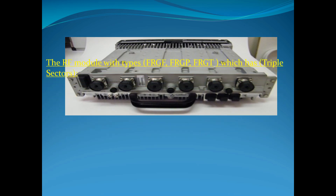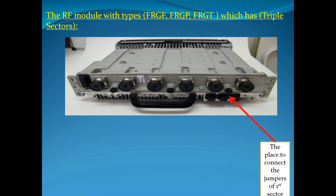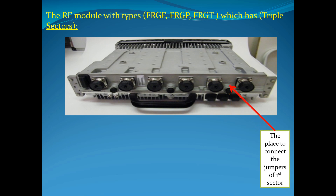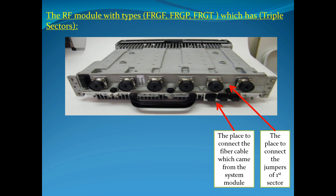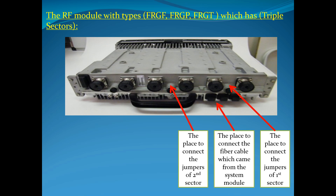The RF Module with types: FRGF, FRGP, and FRGT — which has Triple Sectors. The place to connect the Jumpers of the First Sector. The place to connect the Fiber Cable which came from the System Module. The LED module — the LED which gives the status of the RF Module and its Fan.